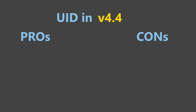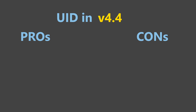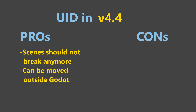Now let's wrap up with the benefits and drawbacks of these UIDs. Scenes and resources have UID info stored in themselves, imports get a .import file to track the UID, and scripts and shaders have a .uid file storing their ID. Scenes should not break anymore even if files are moved outside of the editor, but you have to move the .uid and .import files with them. As long as you heed that rule, files can be moved outside of and without using the Godot editor — something that was not really possible before without corrupting scenes.